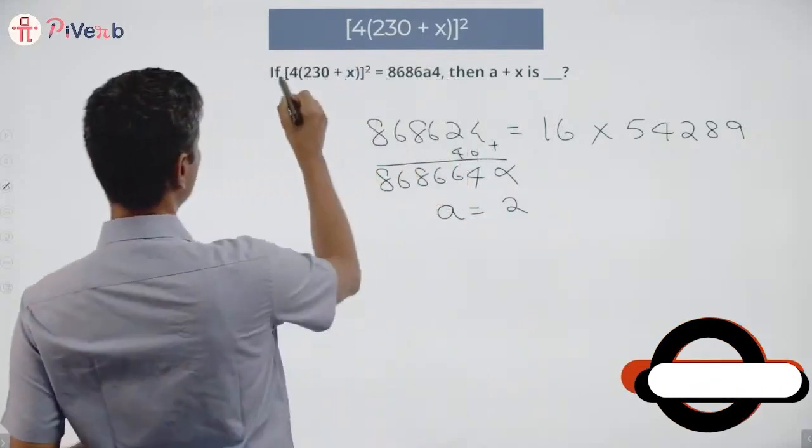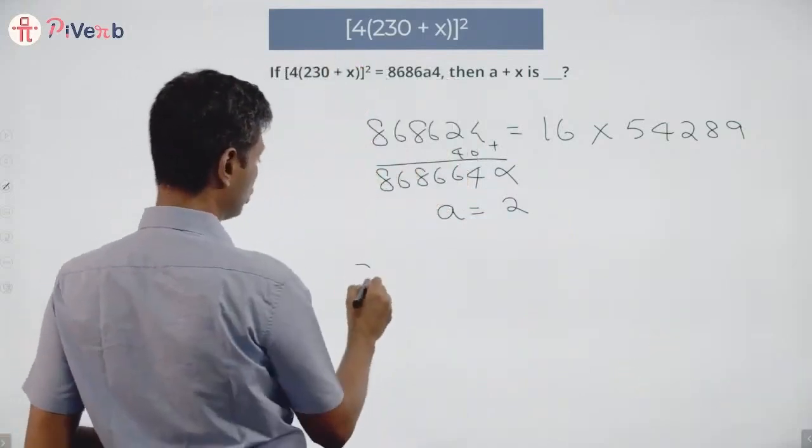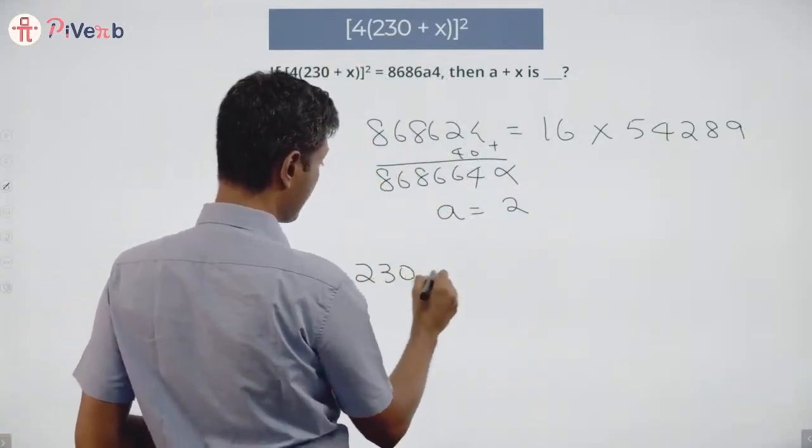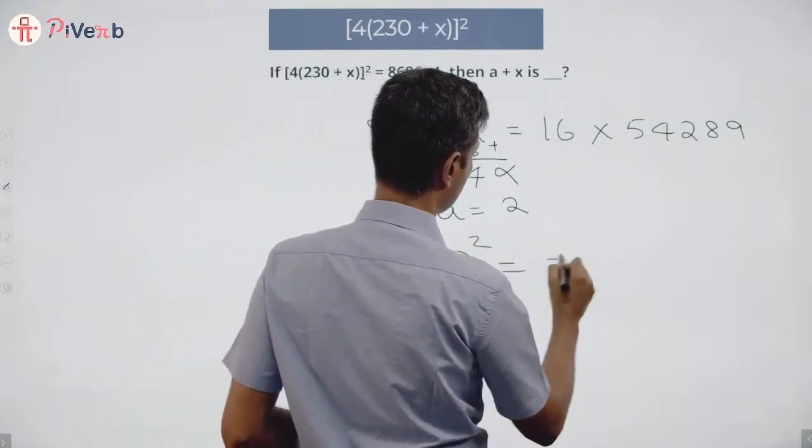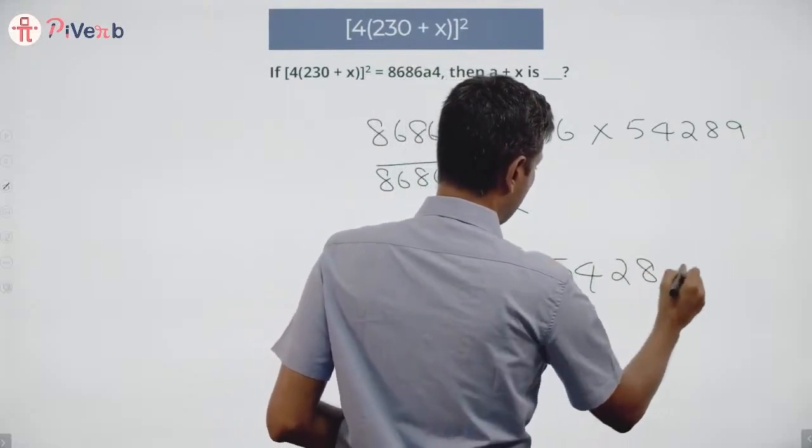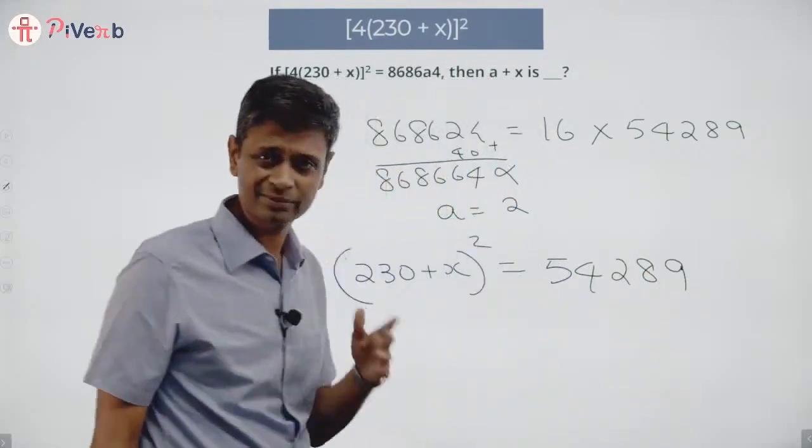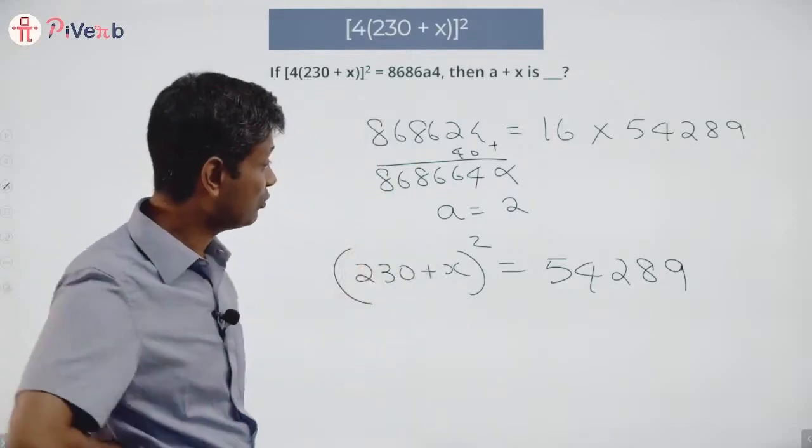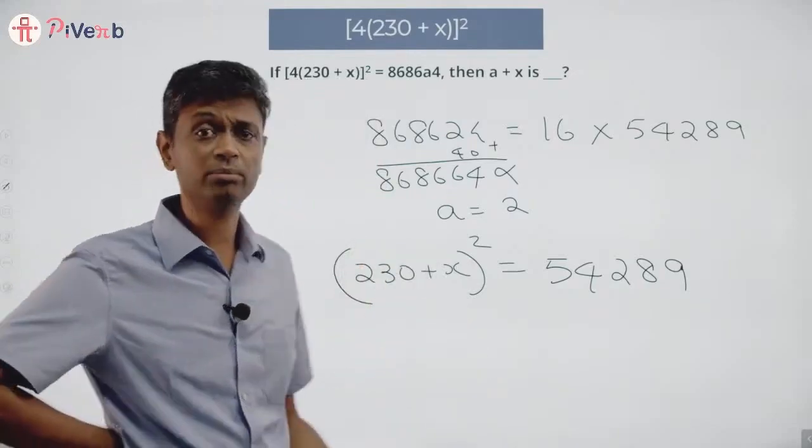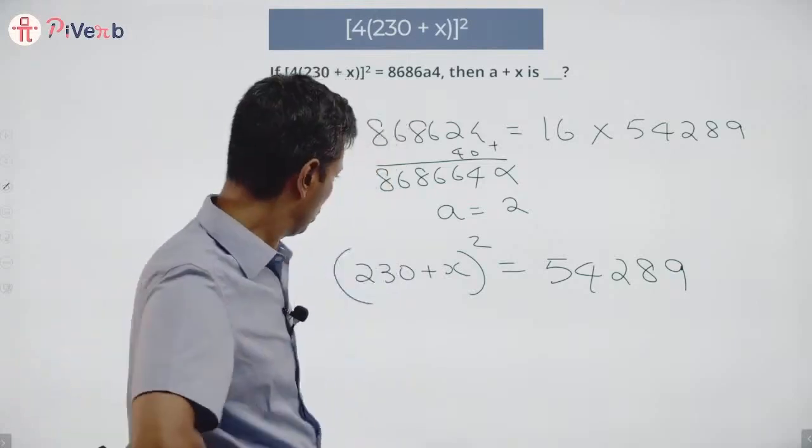Now this 4 square, 16 I have taken care of. (230 + x)² is 54289. It's also tricky, you know how to do this. 54289 is a large number.